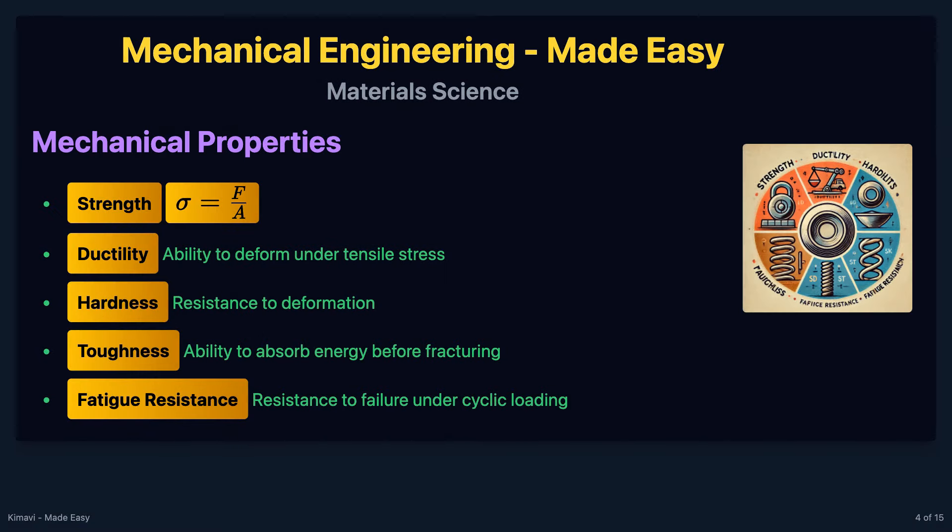Mechanical properties include strength, ductility, hardness, toughness, and fatigue resistance. Strength is the ability of a material to withstand an applied load without failure, measured in terms of stress, which is force per unit area, denoted by sigma equals F divided by A.